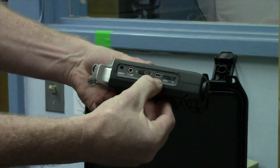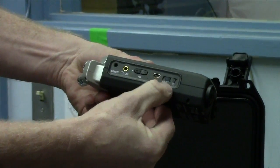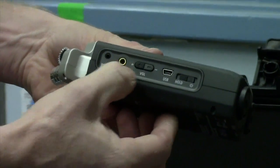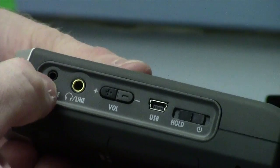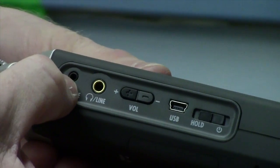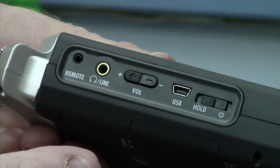On the opposite side you have the USB port, you have the power switch, you have headphone volume and a headphone port that you'll be using. There's also a remote that we have that we can use with these but you won't be using it today.